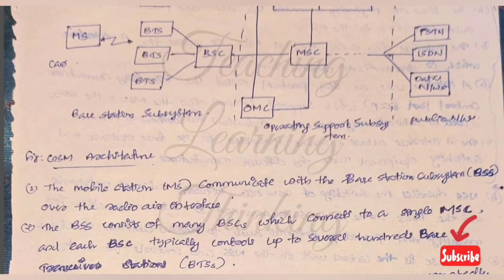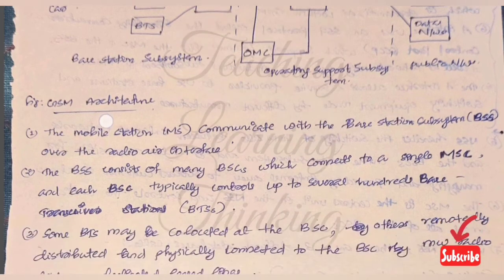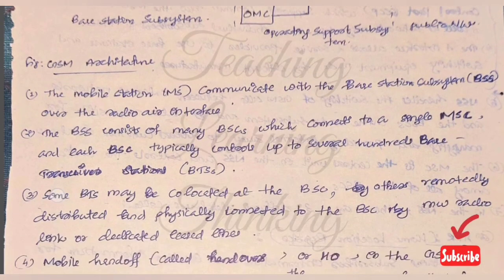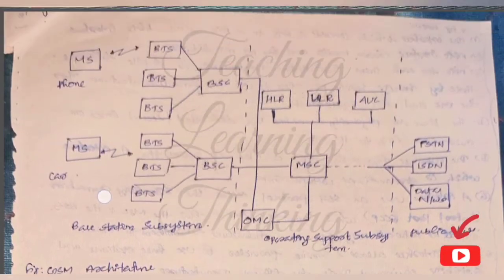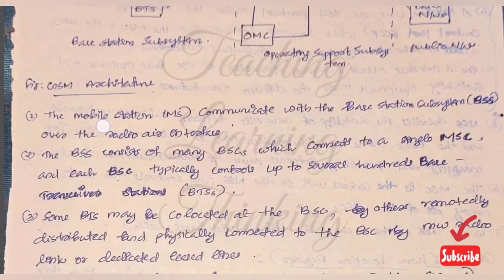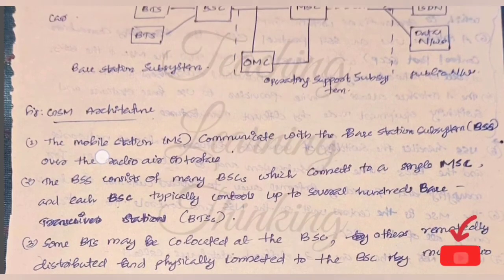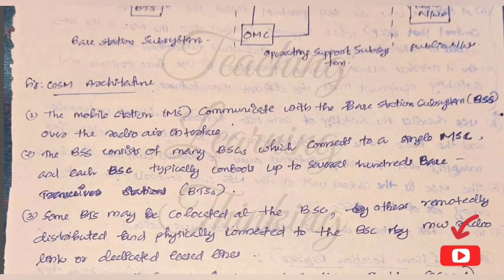Mobile stations communicate with the Base Station Subsystem over the radio air interface. Each BSS consists of many BSCs which connect to a single MSC. Each BSC controls up to several hundreds of Base Transceiver Stations (BTS).